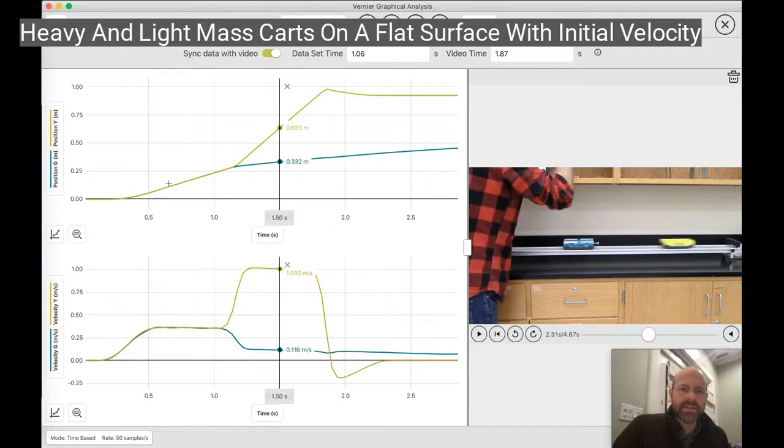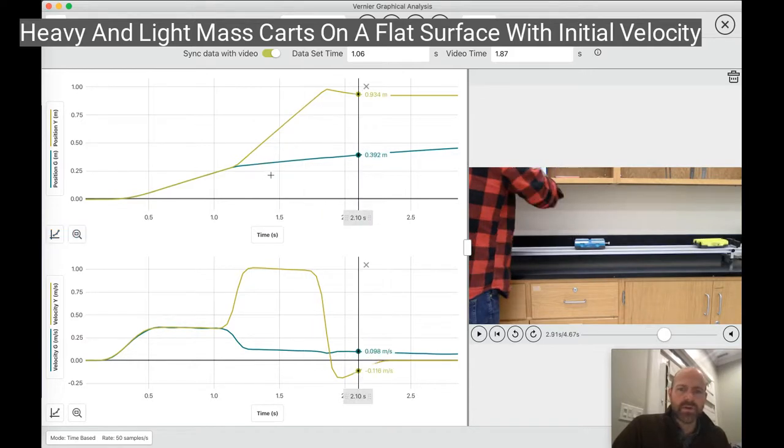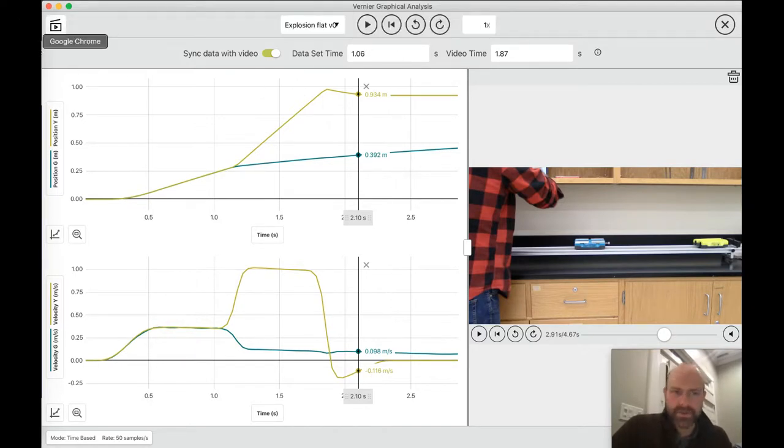Again, we see the two carts moving together and then the big positive slope and the slightly smaller positive slope for the green cart. That kind of is all these different scenarios that might help you think about what an explosion would look like, whether there's a net external force or not on the system.